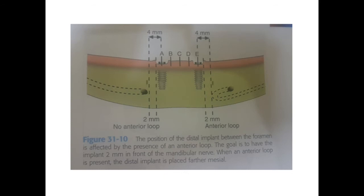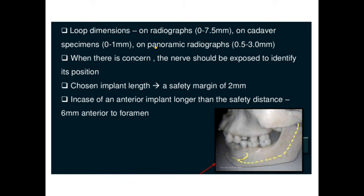This slide shows the anterior loop. We must mark from the anterior loop and go at least 2 mm in front of it. Taking measurements just from the mental foramen can give you wrong measurements. The anterior loop ranges from 0.5 mm to 3 mm. If 3 mm is the maximum anterior loop distance, you need to be at least 5 mm from the mental foramen. Always use CBCT markings to exactly define where the anterior loop is.